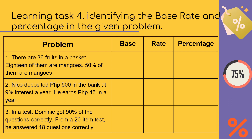From our learning task, let us identify the base, rate, and percentage in this problem: There are 36 fruits in a basket, 18 of them are mangos, and 50 percent of them are mangos. We have three numbers: 36, 18, and 50%. Automatically, the one with the percent sign is the rate — 50%. Between 36 and 18, the larger one is the base — 36. So 18 is the percentage. Written as an equation: 50% of 36 is 18 — rate times base equals percentage.